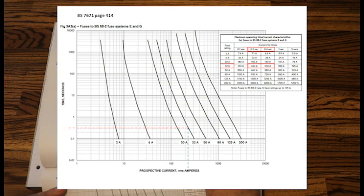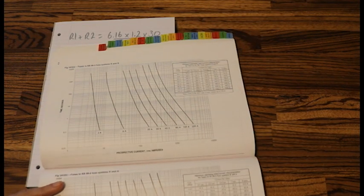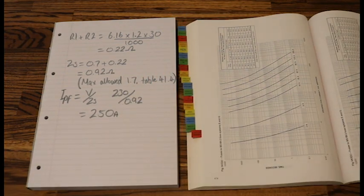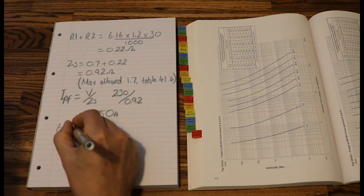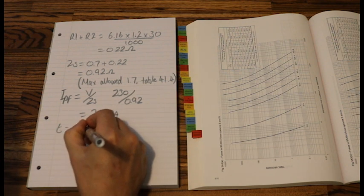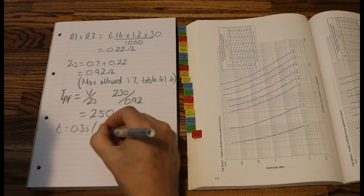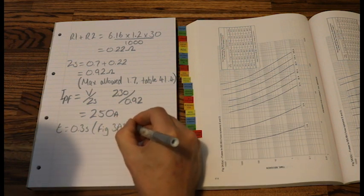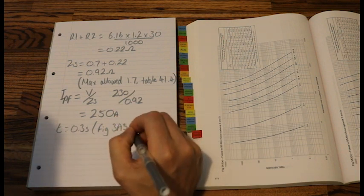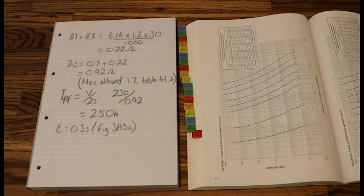So I would say in between that, safe to say that my T, my disconnection time, would be 0.3. So my T value equals 0.3 seconds. And that was from figure 3A3A. So what is the maximum time that I'm allowed? Is it less than 0.3 or is it more than 0.3?